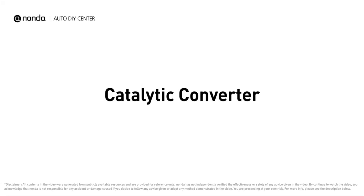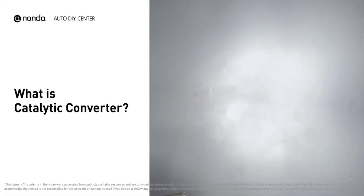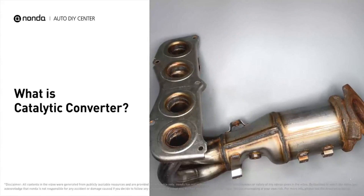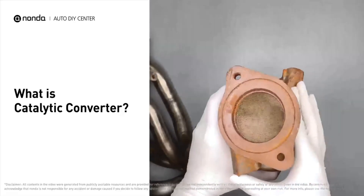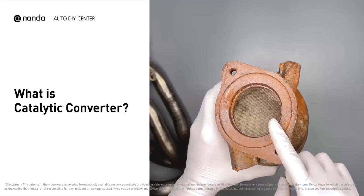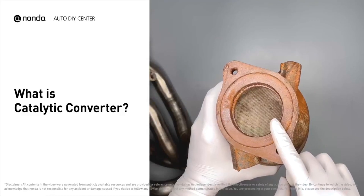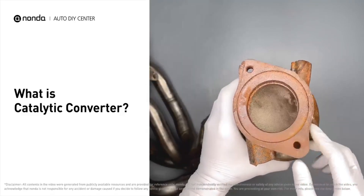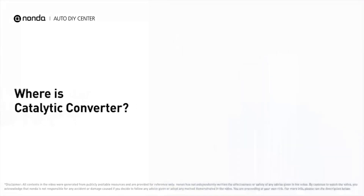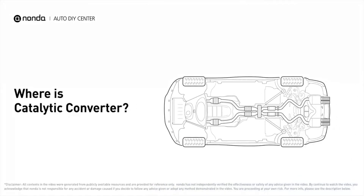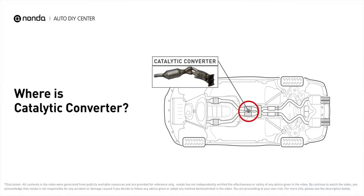Catalytic converter. A catalytic converter is an exhaust emission control device that consists of a stainless steel shell, which encloses a ceramic honeycomb core. This provides the catalyst and changes harmful substances in a car's exhaust gas into less harmful ones like carbon dioxide and water vapor by means of chemical reactions. The catalytic converters are usually located in a box on the exhaust pipe under your car.